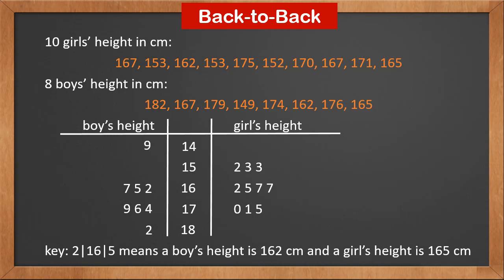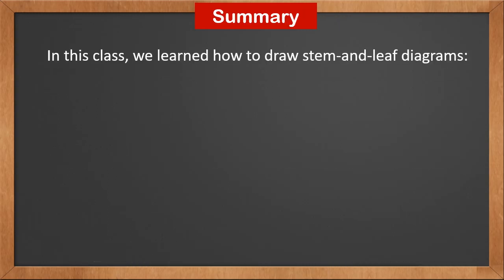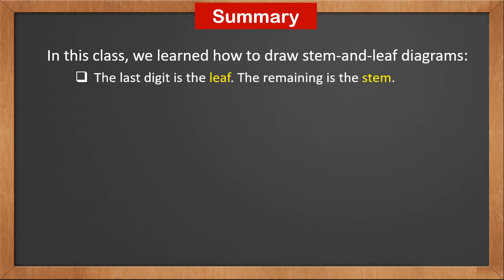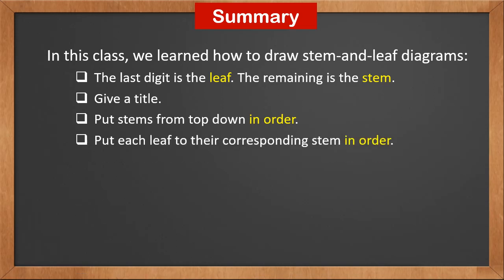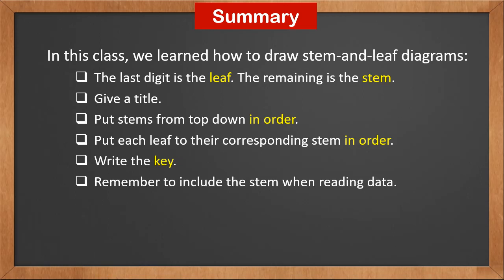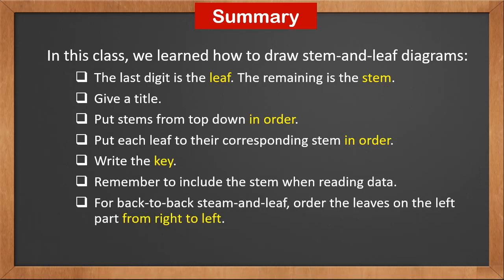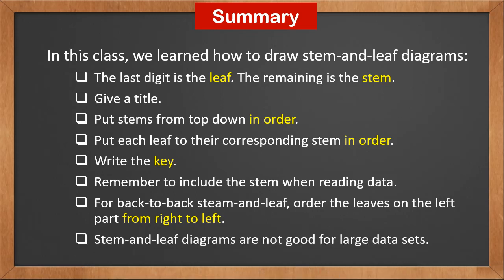Now we can compare boys' and girls' heights. We can see that boys' heights have a wider range and the median is larger than girls'. In summary: the last digit is the leaf, the remaining digits are the stem; give a title; put stems top-down in order; put each leaf next to its corresponding stem in order; write the key; remember to include the stem when reading data. For back-to-back stem and leaf, order the leaves on the left part from right to left. Stem and leaf diagrams are not good for large data sets.